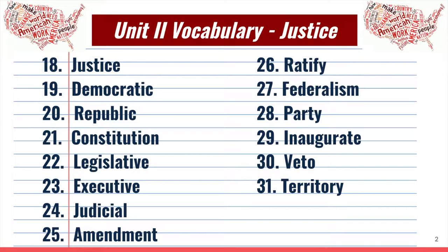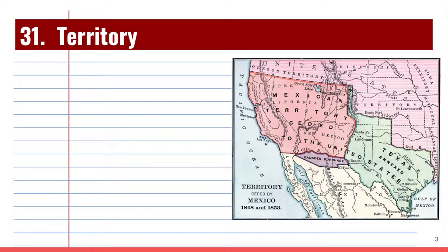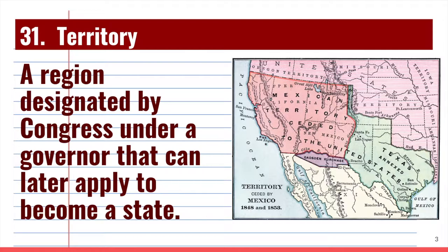The next slide is simply a review of vocabulary, which we have already done. We always learn our vocabulary prior to the unit itself, so you have already had your quiz on these words, but these words will be used throughout the lessons of our unit on justice. In this particular lesson, you're going to hear the word territory used. A territory is a region designated by Congress under a governor that can later apply to become a state.